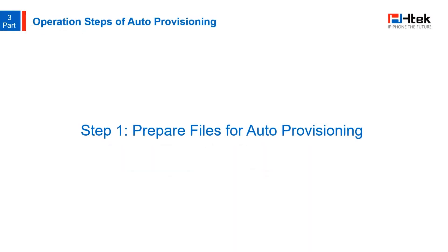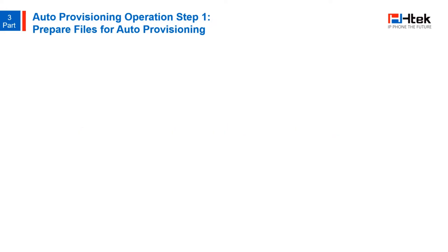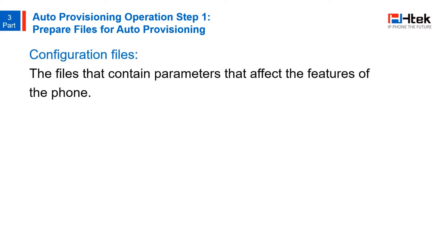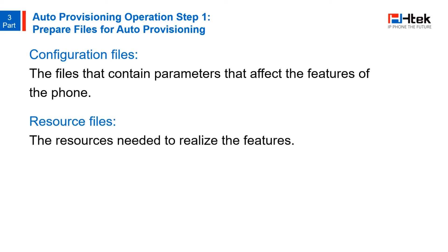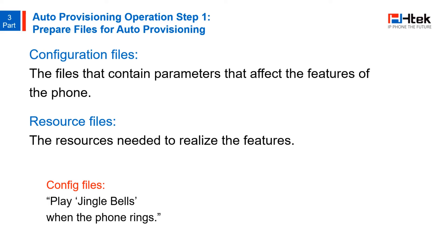The first step is to prepare files for auto-provisioning. You need to manage configuration files and resource files. Configuration files contain parameters that affect the features of the phone. Resource files, on the other hand, are the files used as resources to realize the configured features. Take ringtone as an example — say we want to set the phone's ringtone as a song called Jingle Bells. The configuration files would tell the device that when there is a phone call, use Jingle Bells as a ringtone. But those files don't have the sound inside — in order to really hear the song, you've also got to have the audio file Jingle Bells as a resource file to work together with the configuration file to play it as a ringtone.